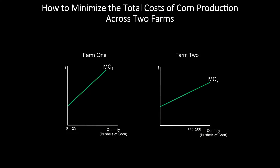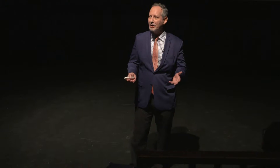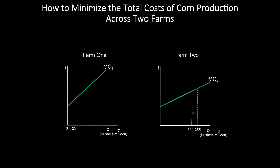Let's remember that we can think about the height of the marginal cost curve as measuring the marginal cost of that nth unit — in this case, let's say 200 units. So let's suppose that you produce all 200 units on farm two. Now, is there a way to reallocate production, to maintain production, but to reduce your total cost? Well, let's imagine that you were to produce fewer units on farm two. By producing 25 fewer units on farm two, your costs fall by area A.